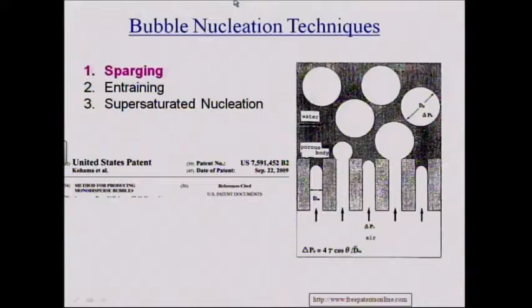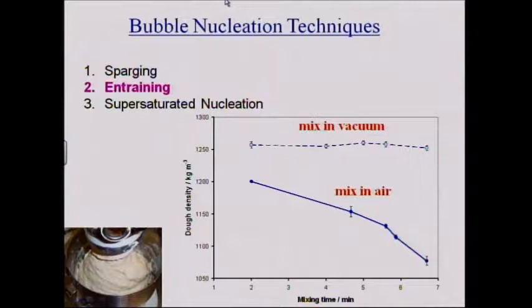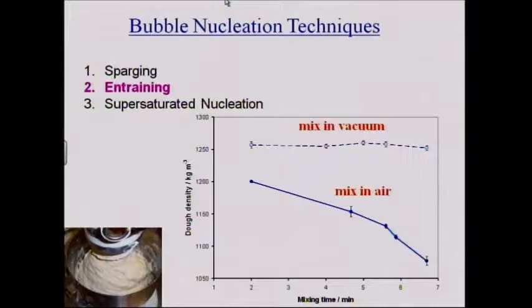The second way is by entrainment. We've done a fair bit of work looking at dough systems where we're entraining gas into the dough. If you look at mixing in vacuum, there are no molecules of gas on top of the mixer, so as the dough slops over it can't pull gas molecules in — no matter how long you mix, the density doesn't change. When doing normal mixing, the longer you mix, the more gas you entrain as a result of the dough slapping over pockets of gas, pulling them in, and then subdividing those gas bubbles.